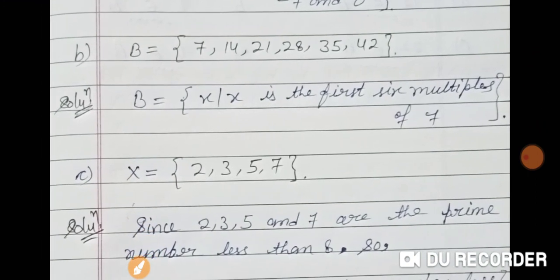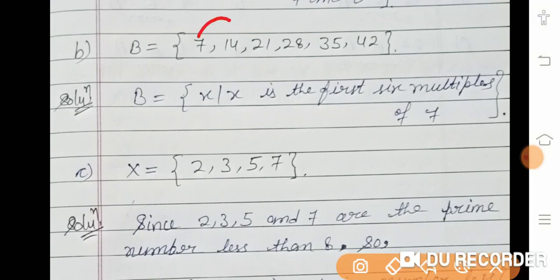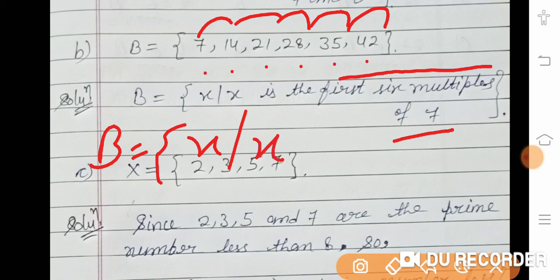B = {7, 14, 21, 28, 35, 42}. These are 7×1, 7×2, 7×3, 7×4, 7×5, 7×6 — the first six multiples of 7. So in set builder form: B = {x | x is one of the first six multiples of 7}.